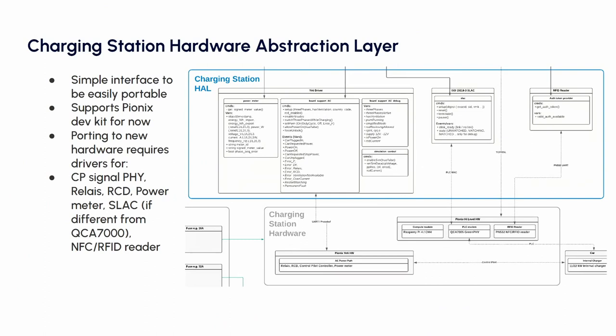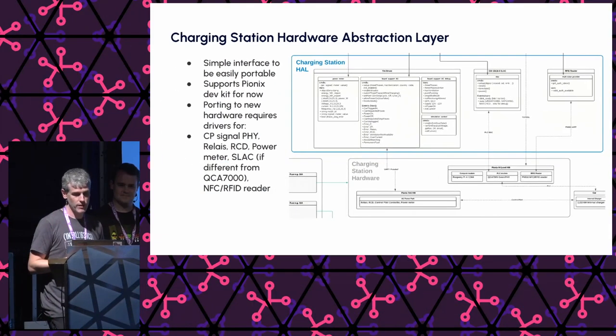Underneath the charging core modules, there are modules that represent the hardware abstraction layer. We tried to make it super easy to port to new hardware. There's one module needed for the control pilot signal — all the PWM generation. You just need to write a small driver that outputs the PWM at the correct duty cycle. And then there's hardware abstraction for things like power meters if you want to measure how much you charge, for RFID readers, and for the power line layer. If you use commonly available hardware, there are good chances that there is already a hardware driver in Everest.